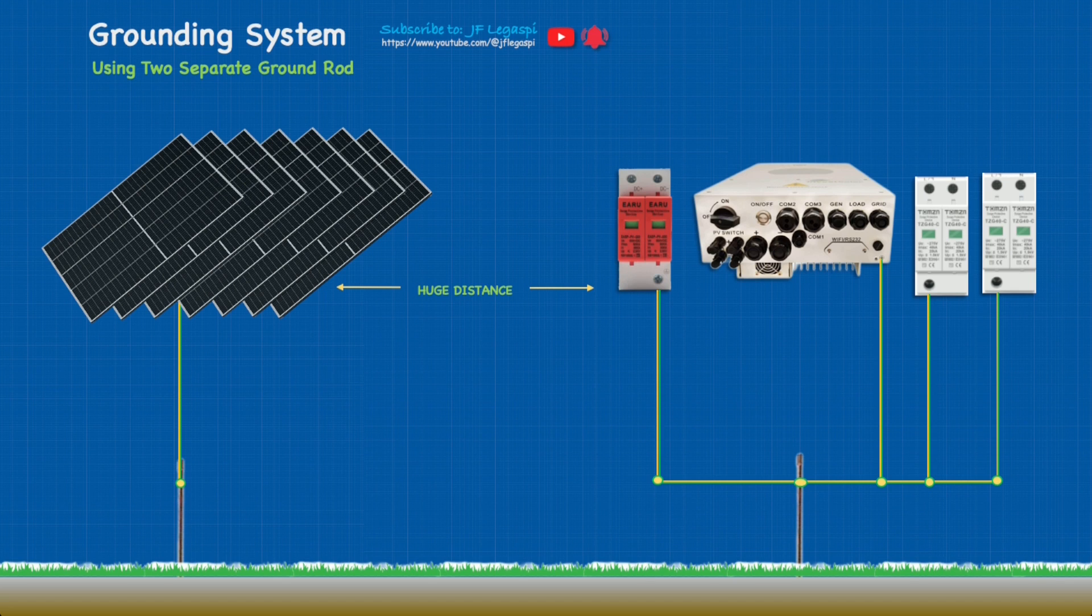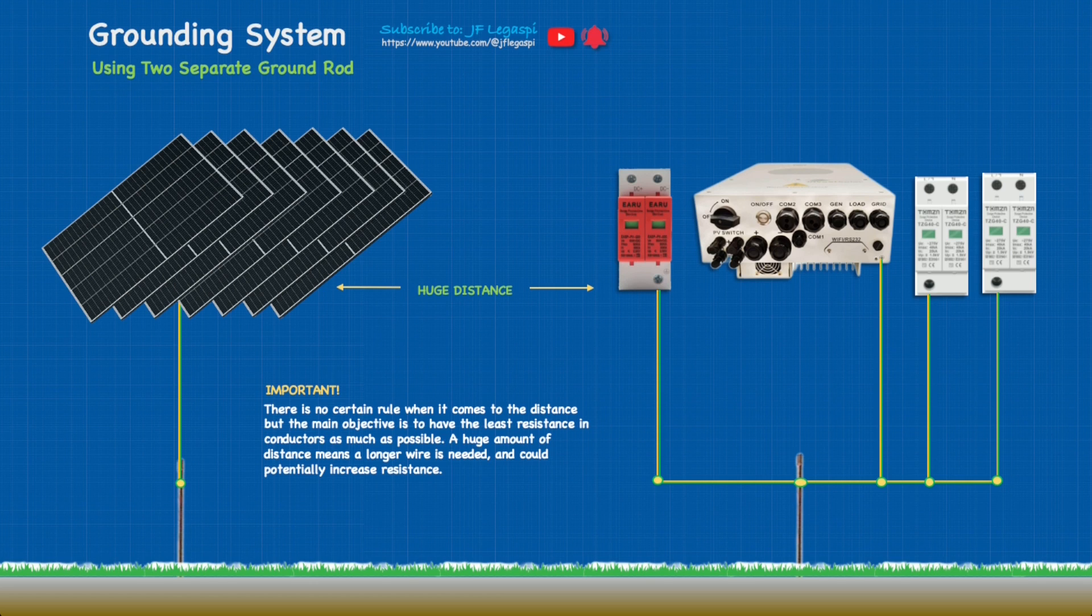Connect your PV array on that first ground rod and the main system on the second one. Important thing: there is no certain rule when it comes to the distance, but the main objective is to have the least resistance in conductors as much as possible. A huge amount of distance means a longer wire is needed and could potentially increase resistance.